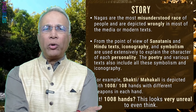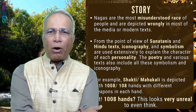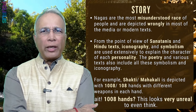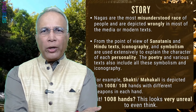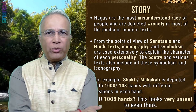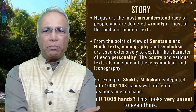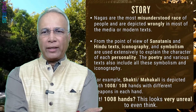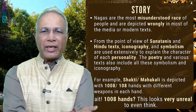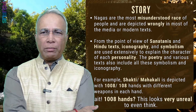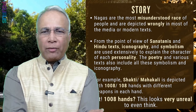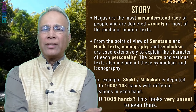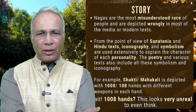Nagas are perhaps the most misunderstood race of all people and are depicted wrongly in much of the media and in modern texts. From the point of view of Sanatanis and Hindu texts, iconography and symbolism are used extensively to explain the character of each personality. The poetry and various texts also include all the symbolism and iconography. For example, Shakti or Mahakali is sometimes depicted with 1008 hands, sometimes 108 hands.